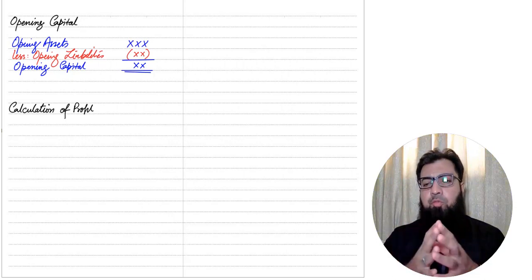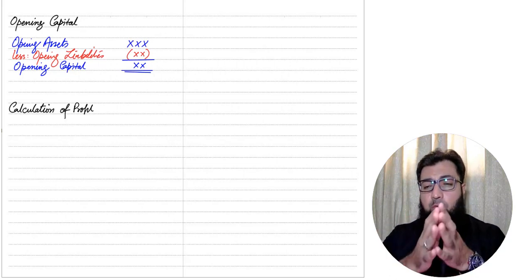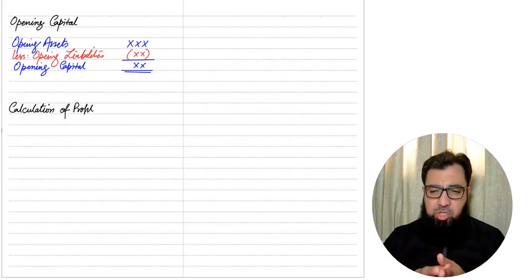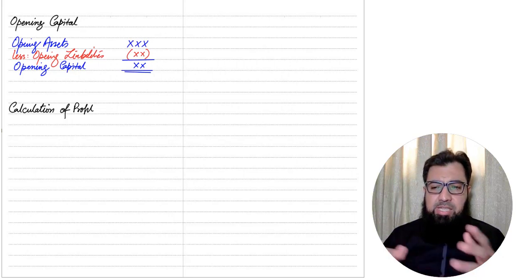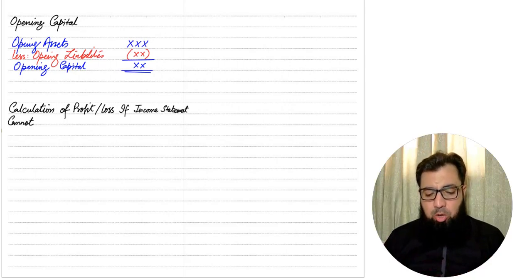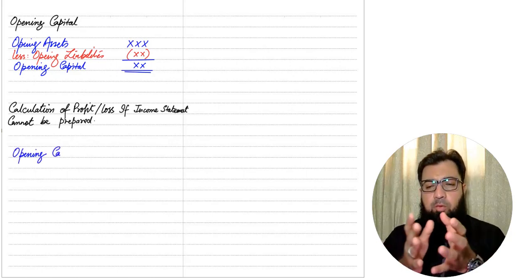Now, how can we calculate profit whenever we cannot make an income statement — whether we are not required to make one, or whether we cannot make one due to the limitation that we do not have sales and purchase values and cannot make a debtor account (SLCA) or creditor account? There is a shortcut method to calculate profit in such cases.